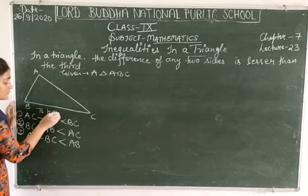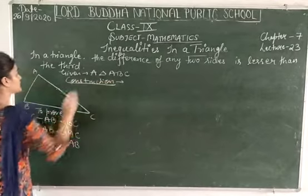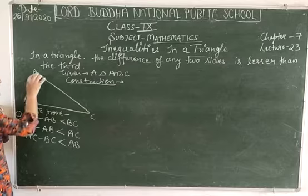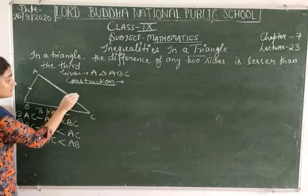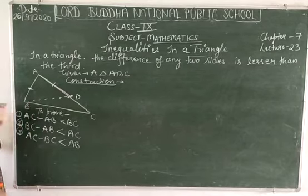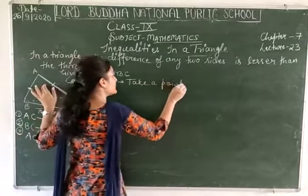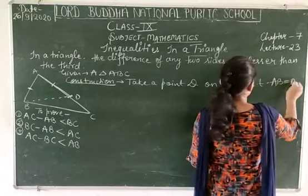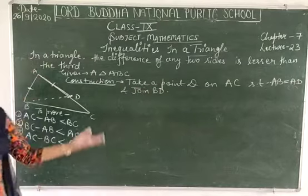We have to prove these three results. Let's make some construction. Take a point D on AC such that AD equals AB, and join BD.